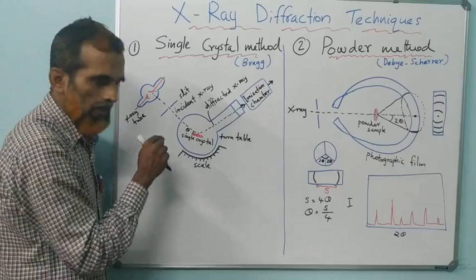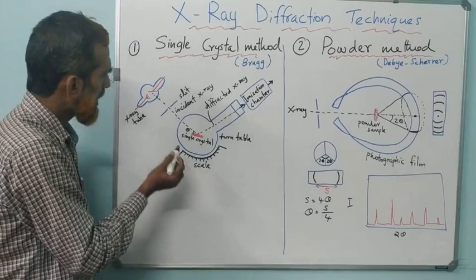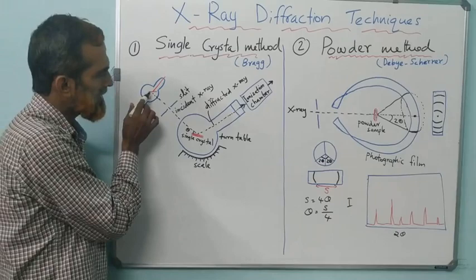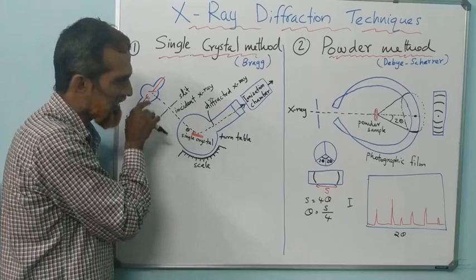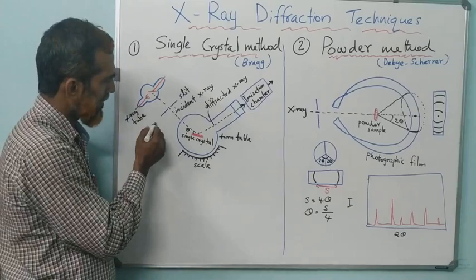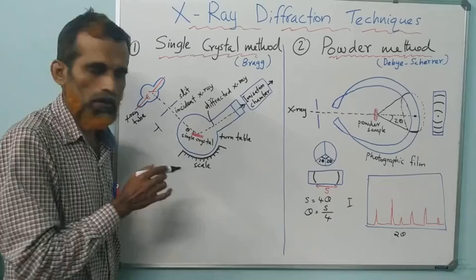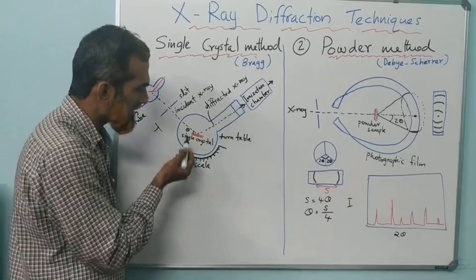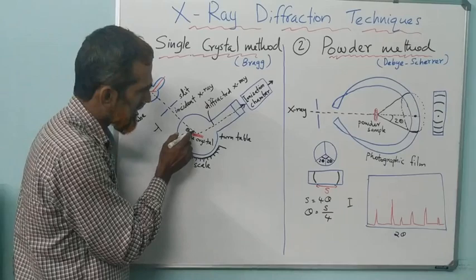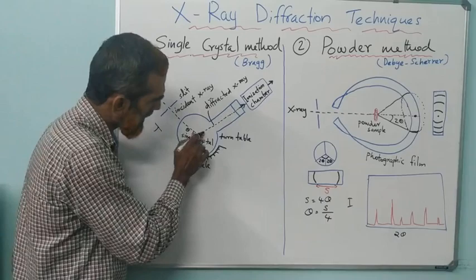The single crystal for study is mounted on the table, and there is an X-ray source — an X-ray tube. The incident X-ray is focused using a slit to get a narrow, monochromatic beam of a known wavelength. It is incident at an angle theta, the glancing angle, which is the angle between the incident X-ray and the plane of the crystal. Practically, what we measure is 2-theta — the angle between the diffracted X-ray and the incident X-ray.